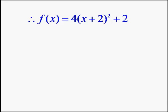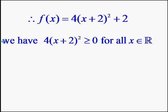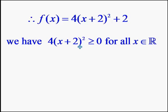Let us proceed to find the maximum or minimum values for the function. Clearly, 4 times (x + 2)² is a positive quantity. The reason is that (x + 2)², being a square, is always positive, and multiplied by positive 4 keeps it positive. Therefore, 4 times (x + 2)² is greater than or equal to 0 for all x belonging to R.